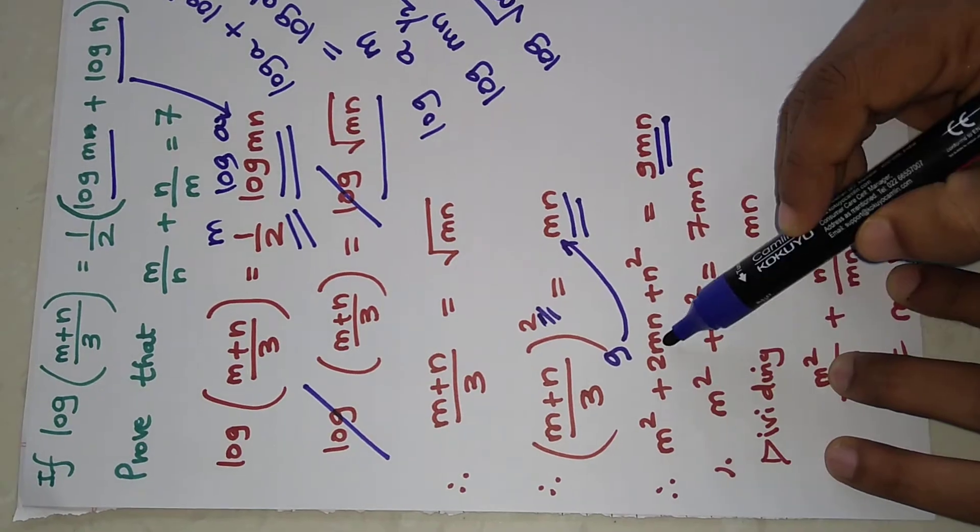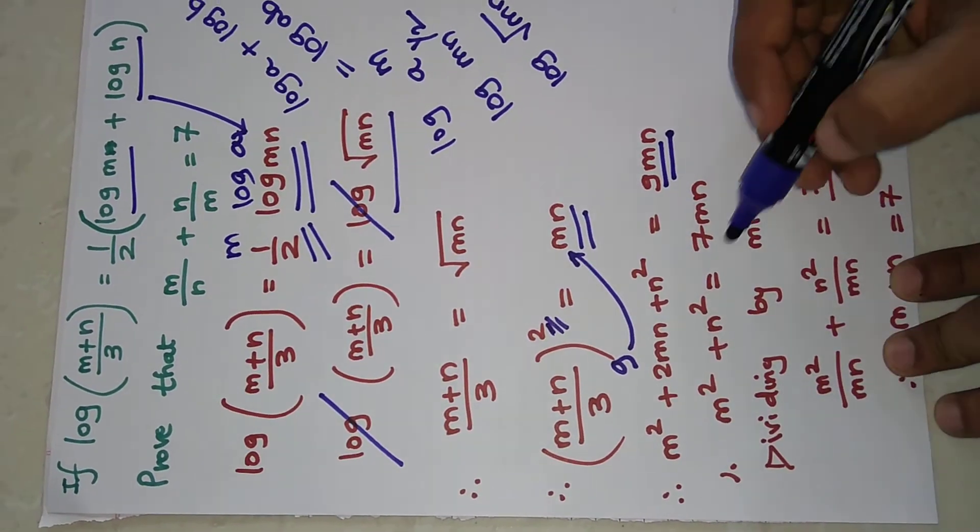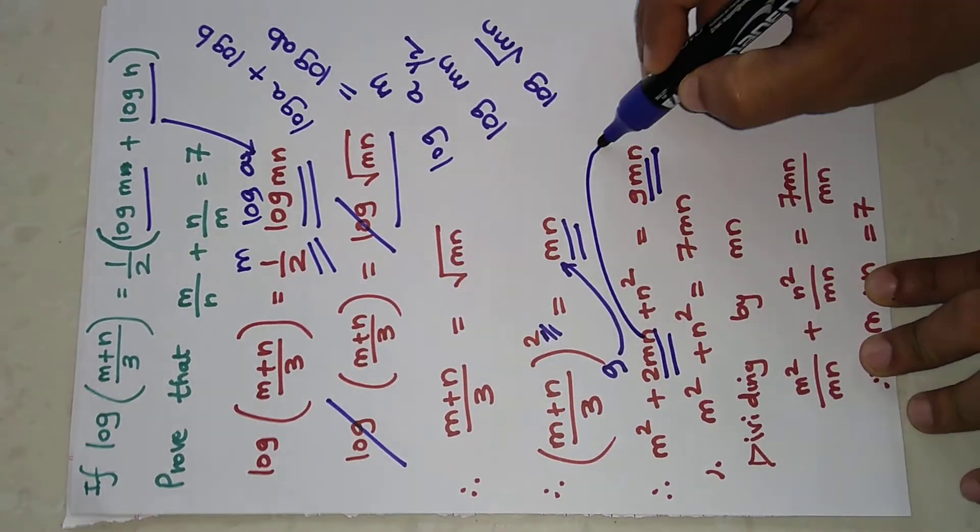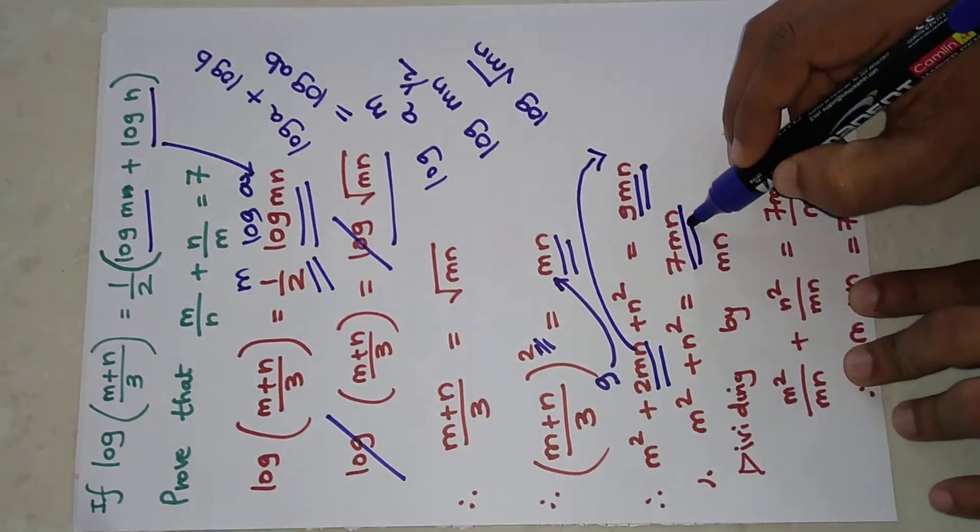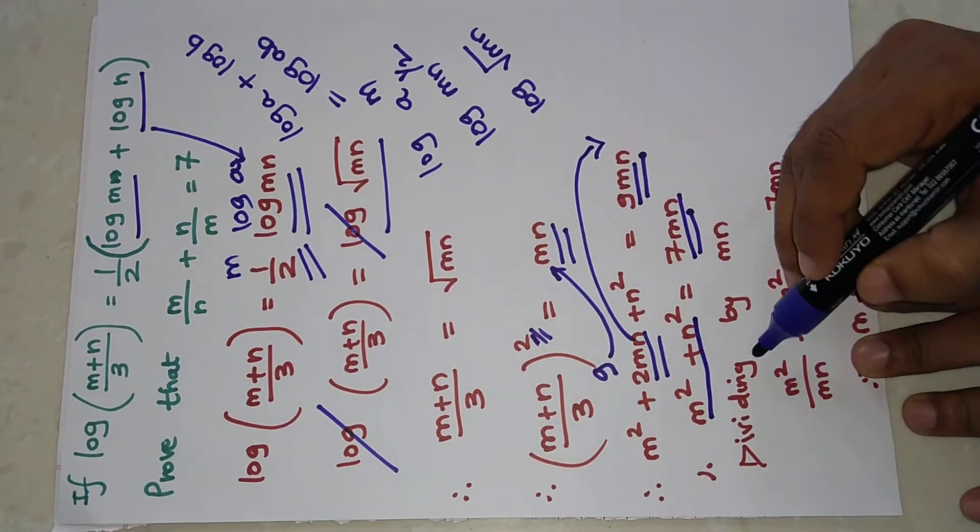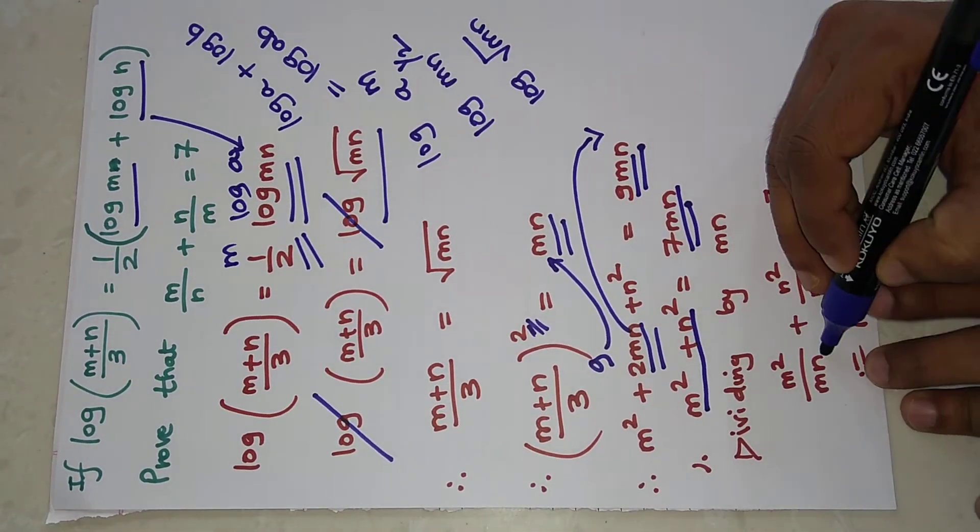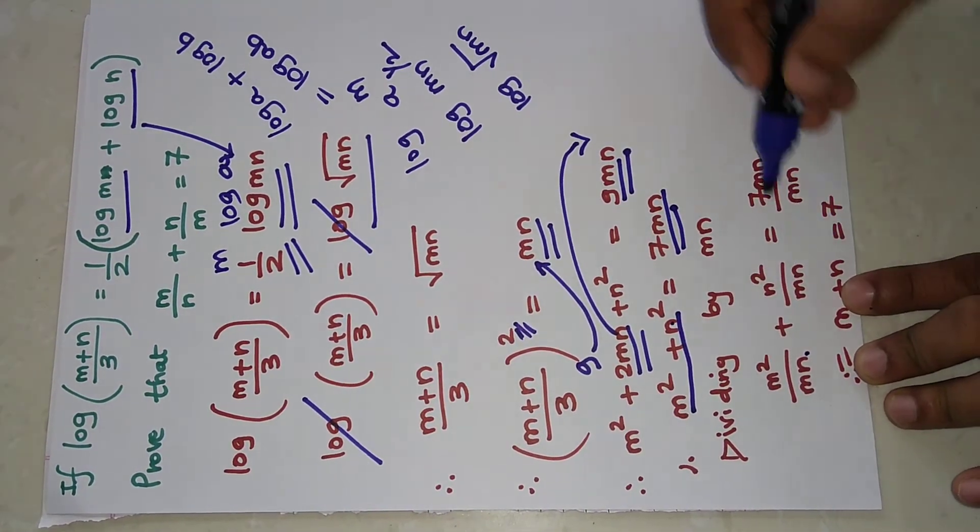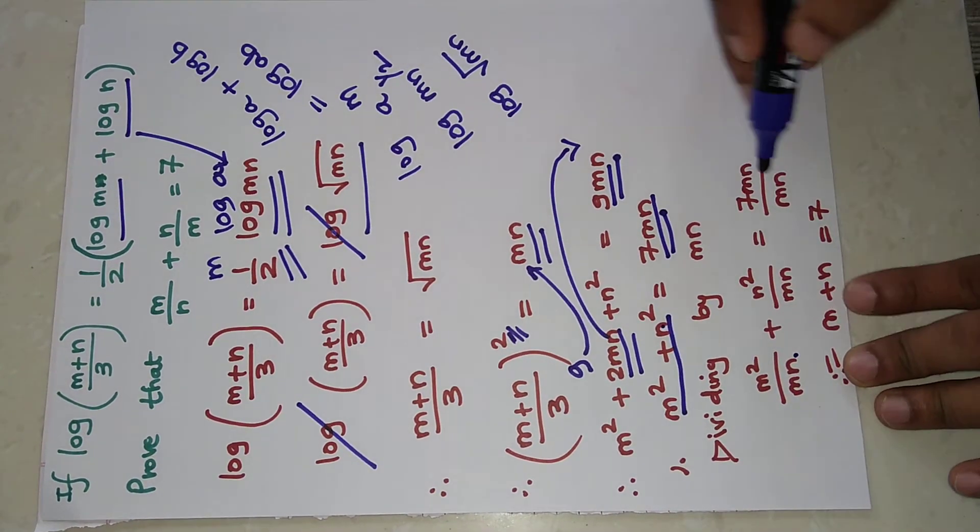And for (m+n) whole squared: m² + 2mn + n². So this 2mn on this side, it will be 7mn, and m² and n² will remain as it is. Now dividing by mn: this term mn, this term also mn, and this term also mn.